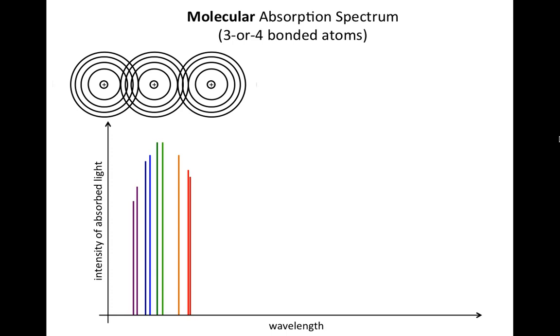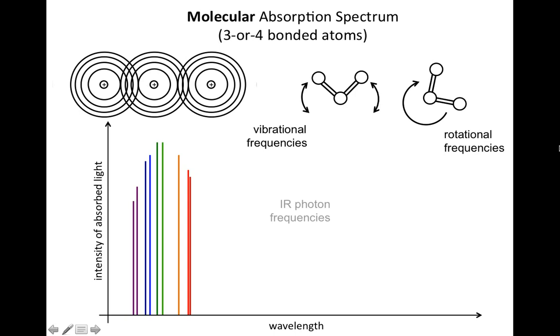But there's another thing that molecules can do—a second, unique way that they can absorb light. Molecules are capable of vibrating back and forth, and they're also capable of rotating. There are vibrational frequencies and rotational frequencies at which the motion occurs. So how do they start vibrating? They absorb infrared photons that match the frequencies of vibration.